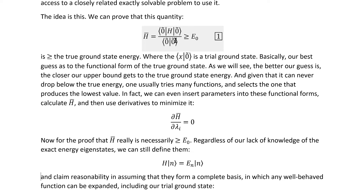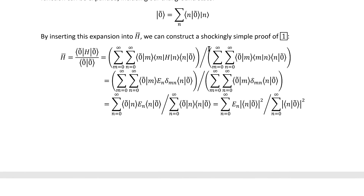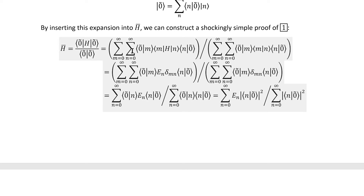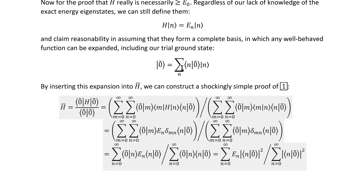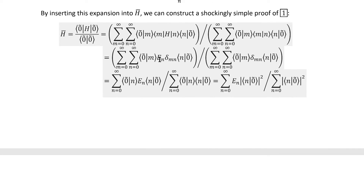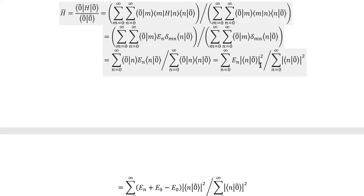It does seem like a really bold statement that this particular quantity would always be greater than or equal to E-naught, but that doesn't mean hard to prove. Upon insertion, we immediately see a bunch of quantities that we know how to work with. This one is a Kronecker delta, which allows us to do one of the sums, and H will act on |n⟩ by the definition given up here, leaving us with an energy eigenvalue and bringing two states together, which give us another Kronecker delta and allow us to do one of the sums in the numerator as well.